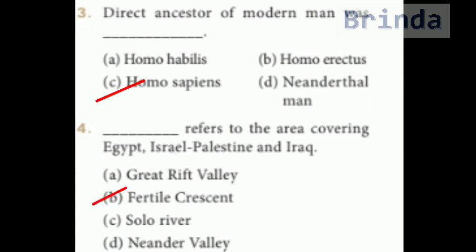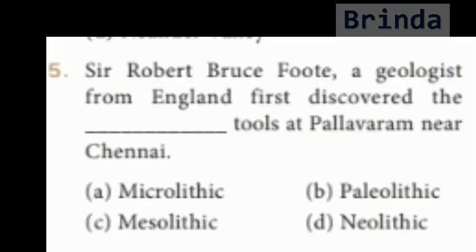Fourth question: which term refers to the area covering Egypt, Israel, Palestine, and Iraq? Options are Great Rift Valley, Fertile Crescent, Solow River, and Neanderthal Valley. The answer is Fertile Crescent. Fertile Crescent refers to the area covering Egypt, Israel, Palestine, and Iraq.